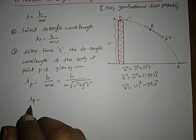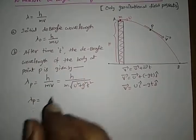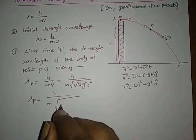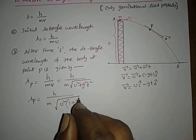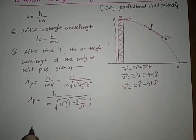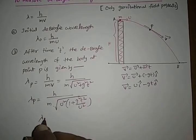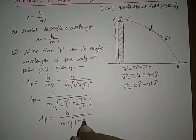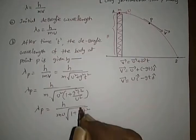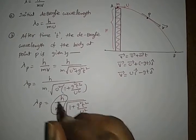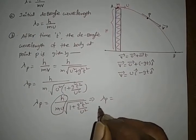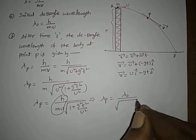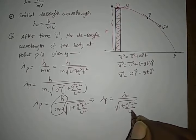The de Broglie wavelength of the body at point P in terms of initial de Broglie wavelength is obtained as follows. Taking u squared common: square root of u squared times (1 plus g squared t squared by u squared), giving root u squared equals u. Therefore, the de Broglie wavelength at point P is h by m u into square root of 1 plus g squared t squared by u squared. Here h by m u represents the initial de Broglie wavelength lambda naught. So, the de Broglie wavelength at any point P is lambda naught divided by square root of 1 plus g squared t squared by u squared.